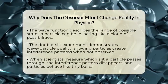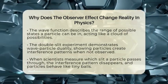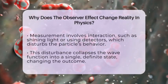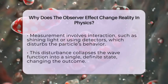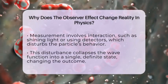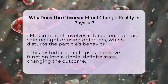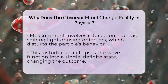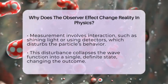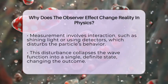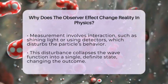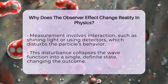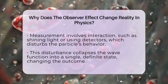This change happens because the act of measuring disturbs the particle. To detect which slit the particle passes through, scientists have to shine light or use detectors that interact with the particle. This interaction alters the particle's behavior. So the act of observation in quantum physics isn't passive — it's a physical interaction that collapses the wave function, forcing the particle into a single, definite state. This is why the observer effect can change reality at the smallest scales. It's not about someone's mind changing things, but about the measurement process itself disturbing the system.